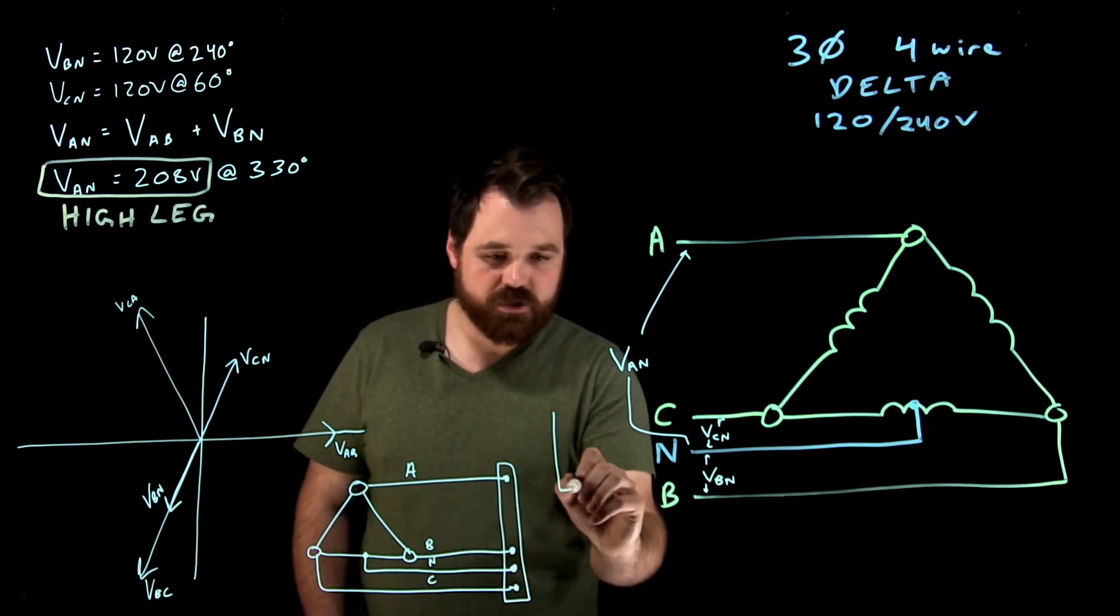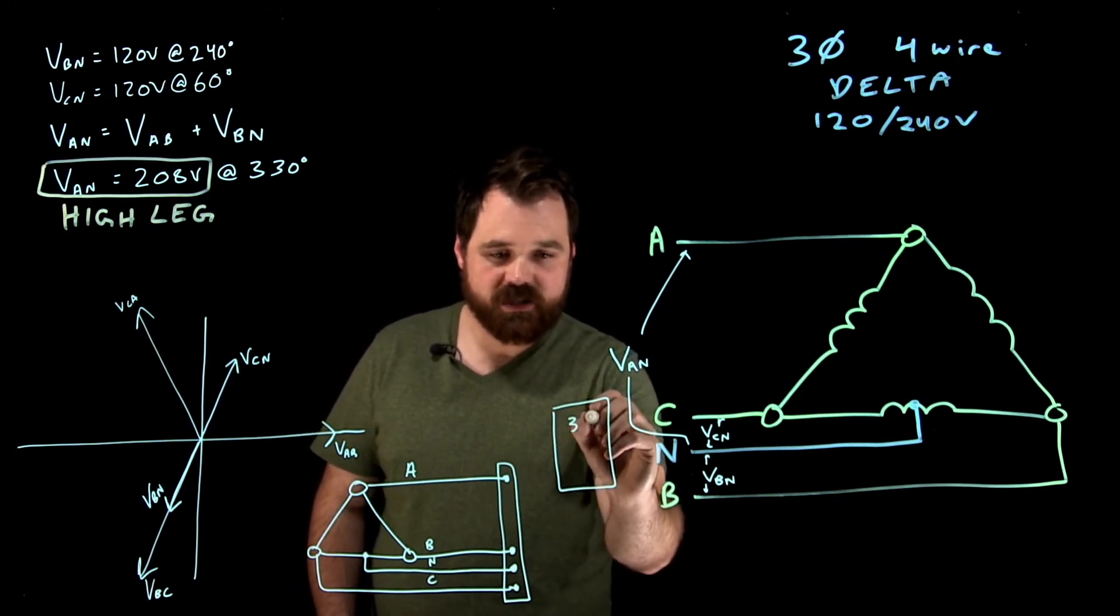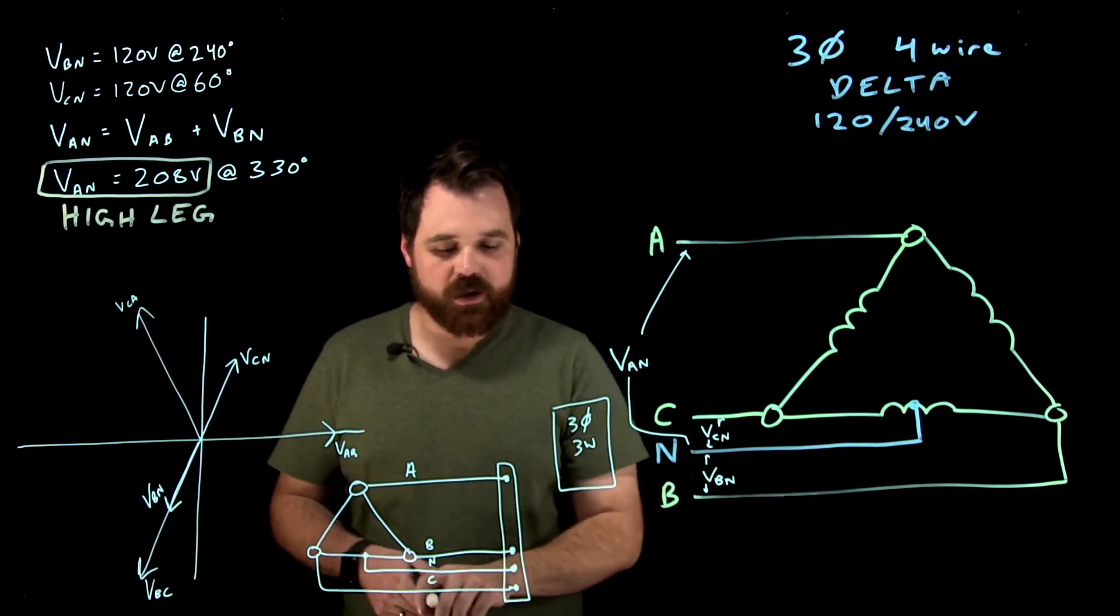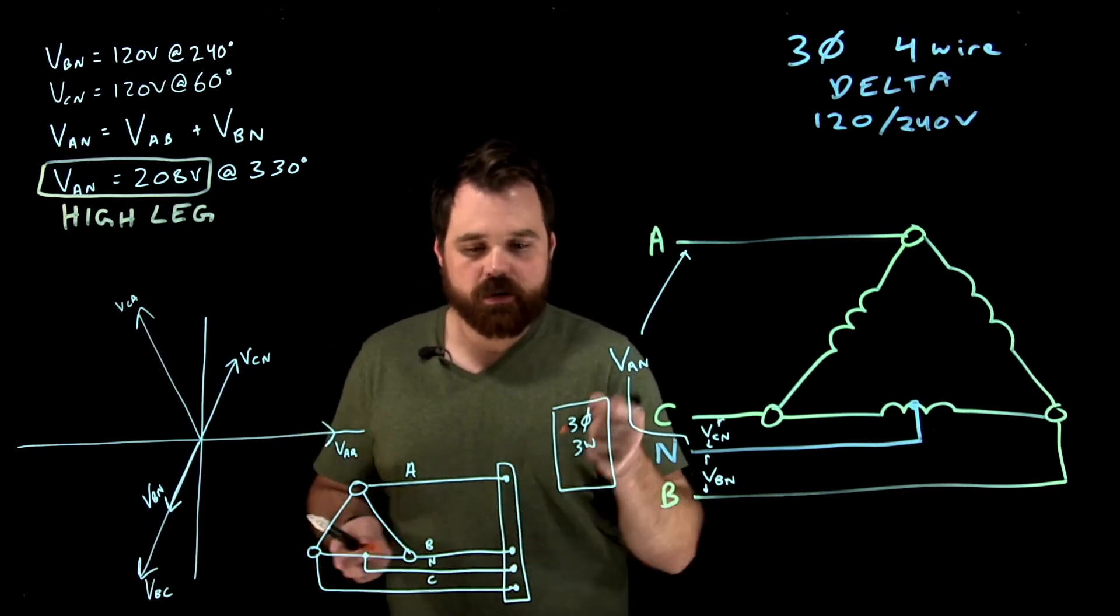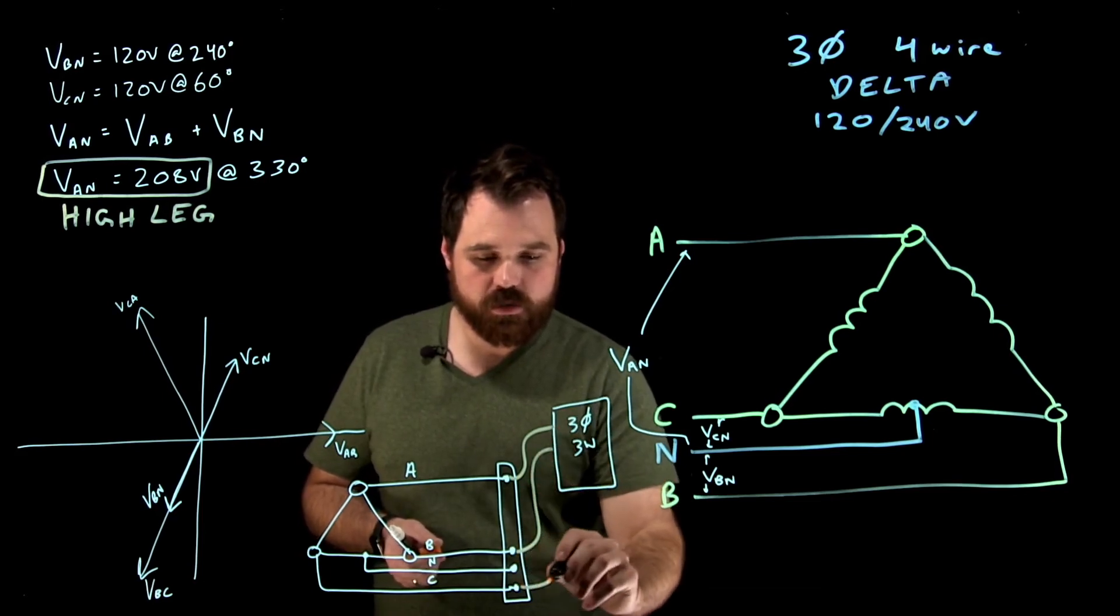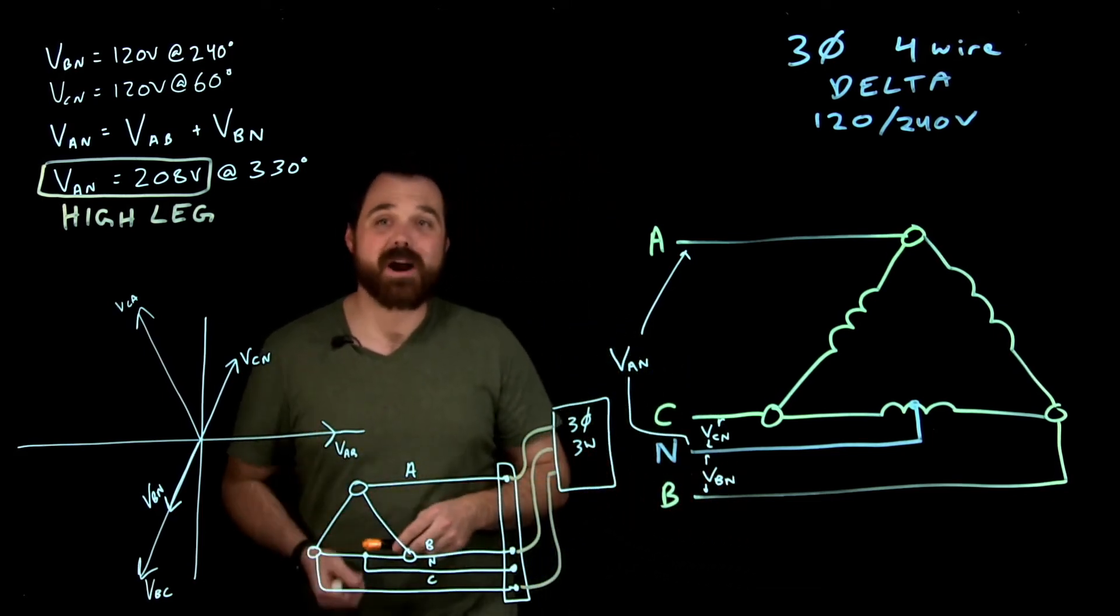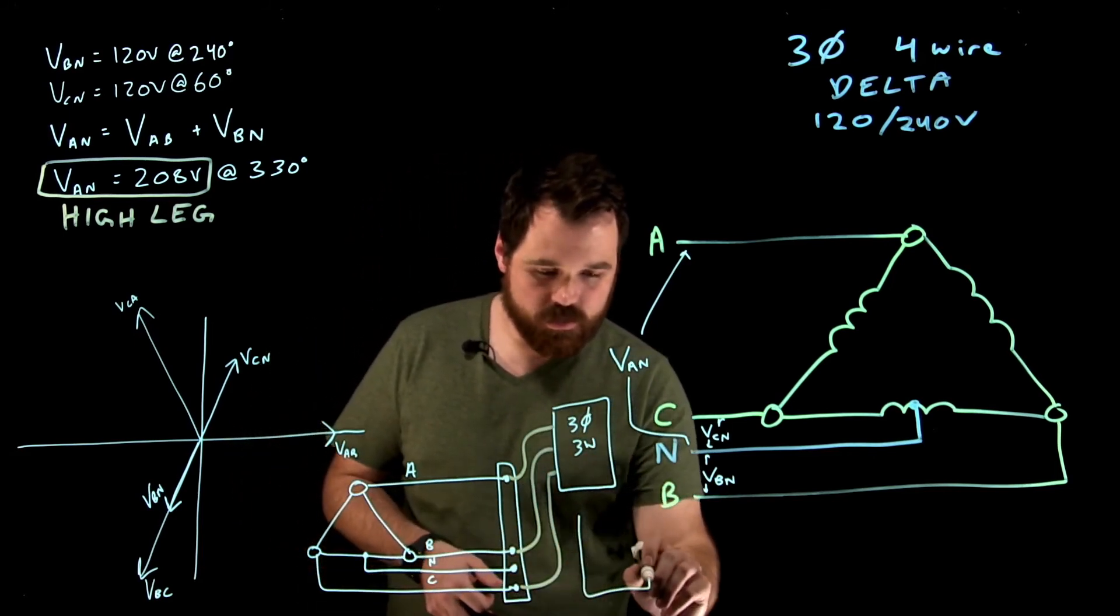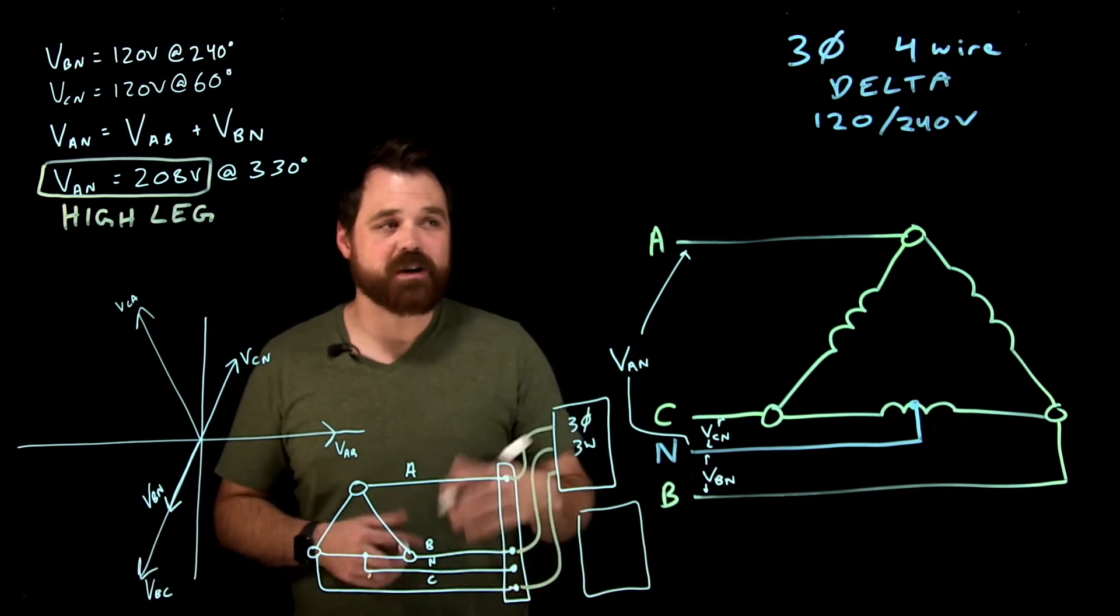Then you'll have two panel boards. This one will be a three phase, three wire. And it will see A, B, and C. So it's a three phase, three wire panel. It's got line A, line B, and line C. The other one will be a completely separate situation.